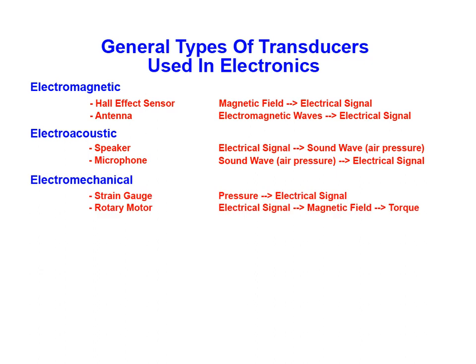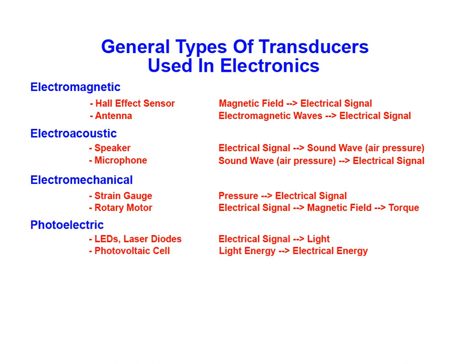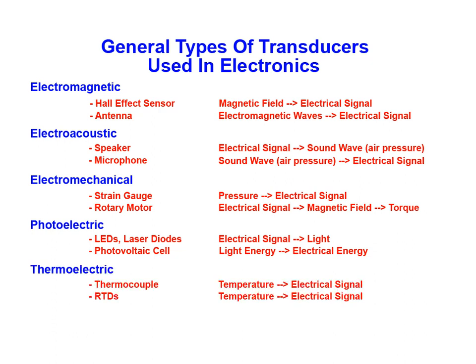There are also electromechanical transducers, such as the strain gauge or rotary motor. Photoelectric transducers convert electrical signals into light or light into electrical signals. Thermoelectric transducers convert temperature into electrical signals. Some examples are the thermocouple or the resistive temperature detector, or RTD.